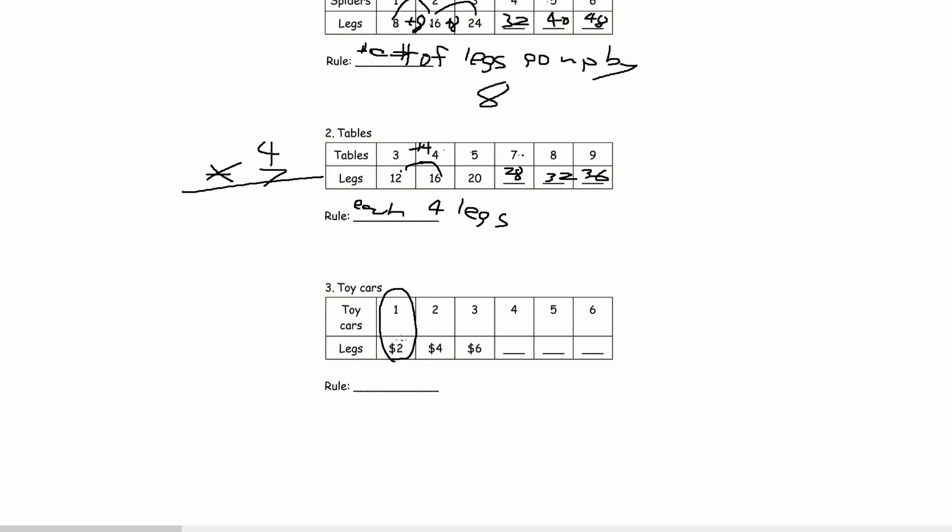If there's two toys, that would be double this amount, which would be 4. If there's 3, that would be triple. 4 quadruple and then keep going. So 4 times 2 is 8. And 5 times 2 is 10. And 6 times 2 is 12. Goes up by $2.